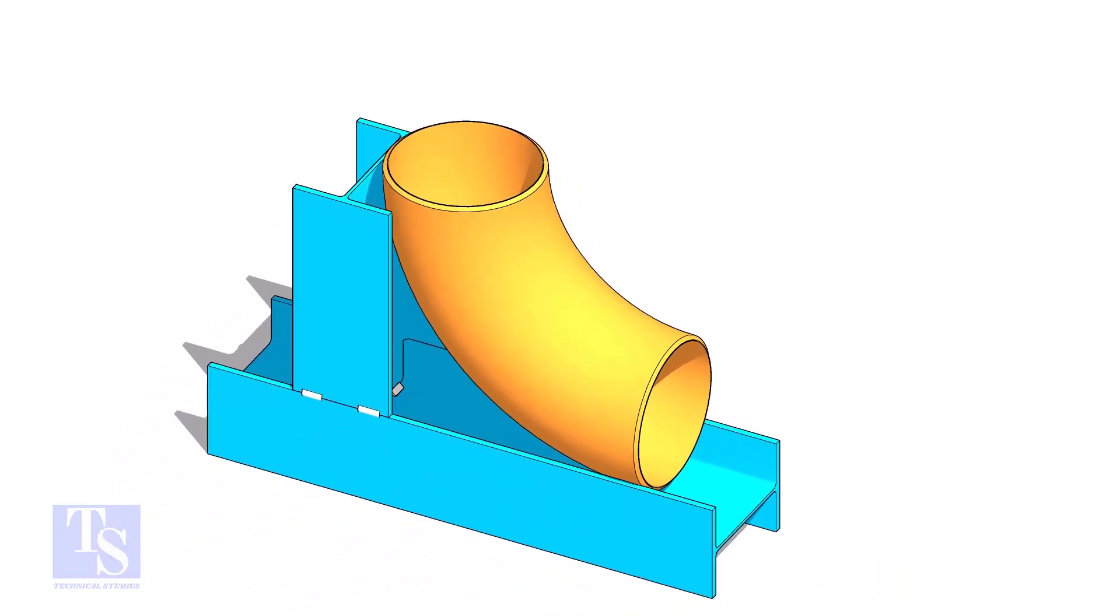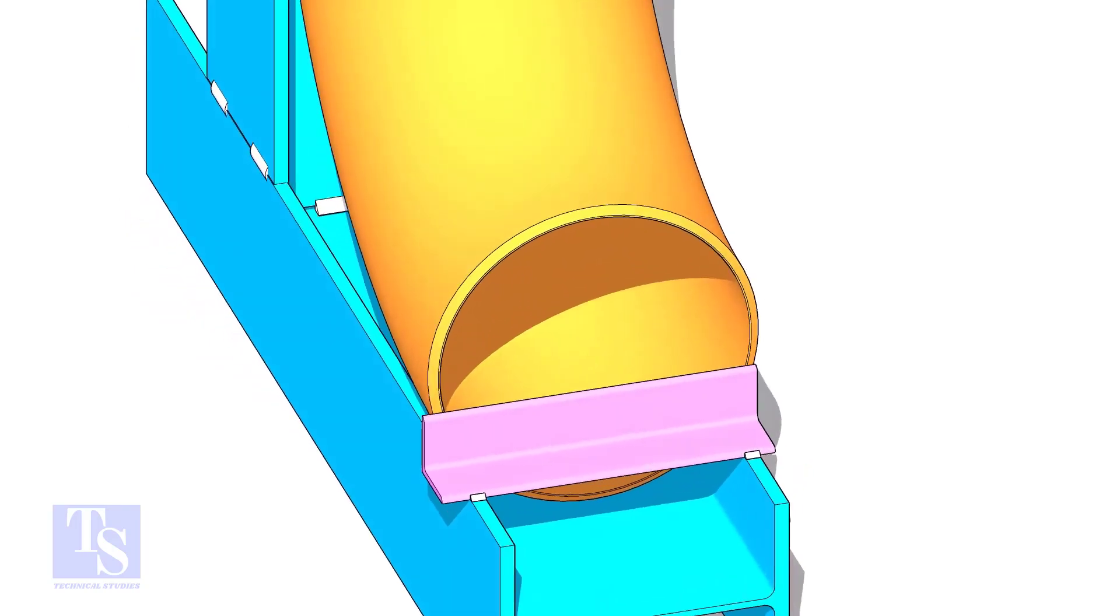Tack weld a piece of angle bar or a piece of a plate at the bottom side of the jig to arrest the elbow.